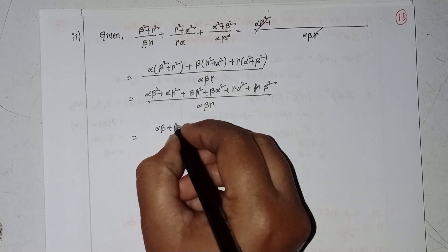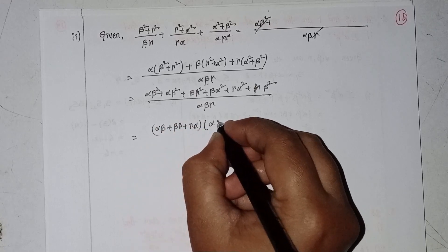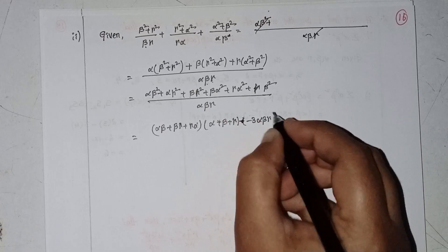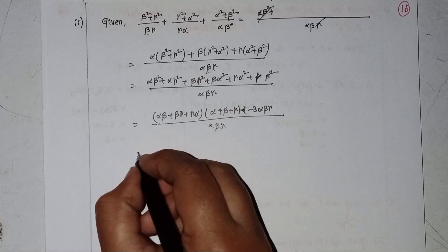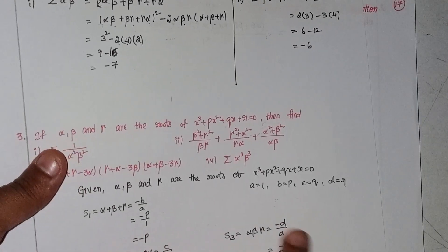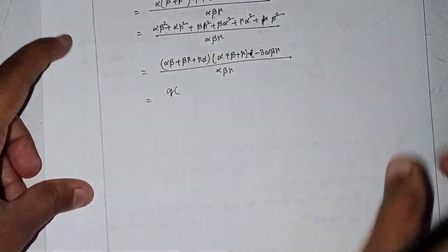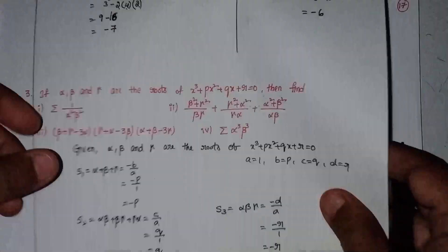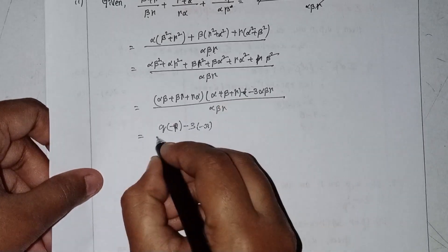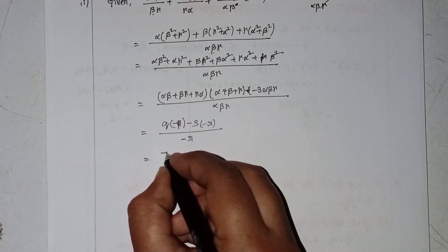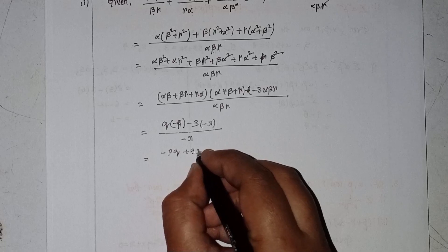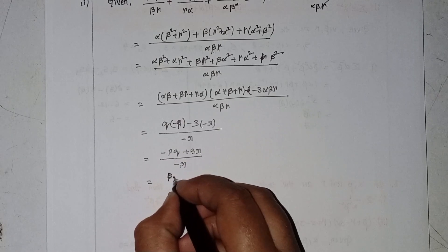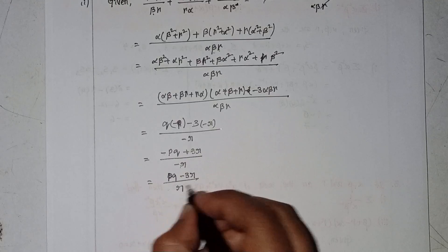The numerator factors as (αβ + βγ + γα)(α + β + γ) - 3αβγ divided by αβγ. Substituting values: q × (-p) - 3×(-r), all divided by (-r). That gives: -pq + 3r over -r = (pq - 3r)/r.